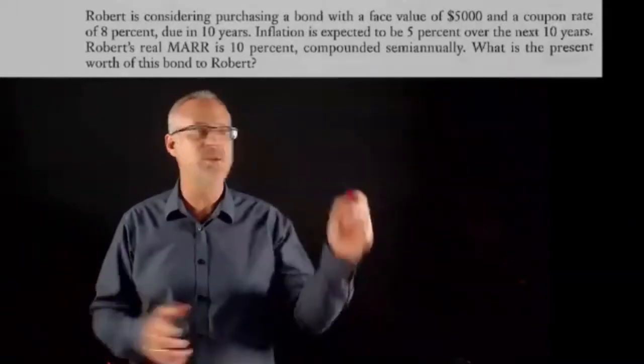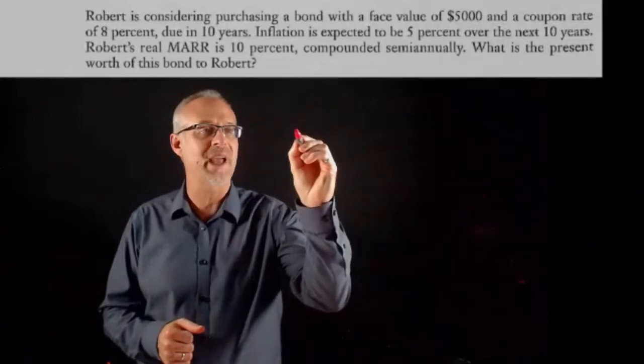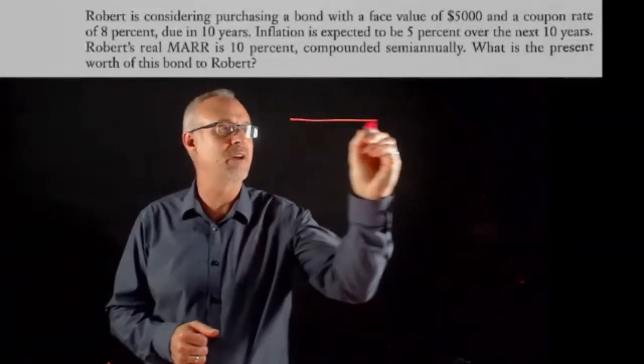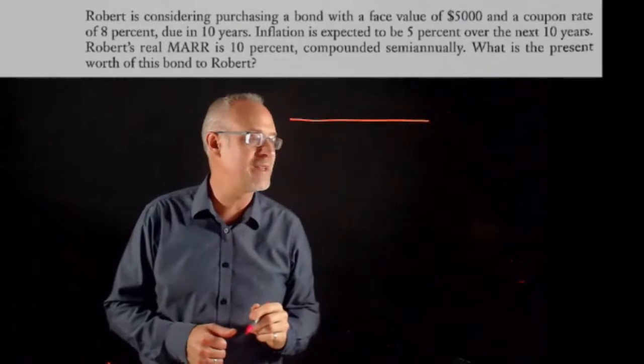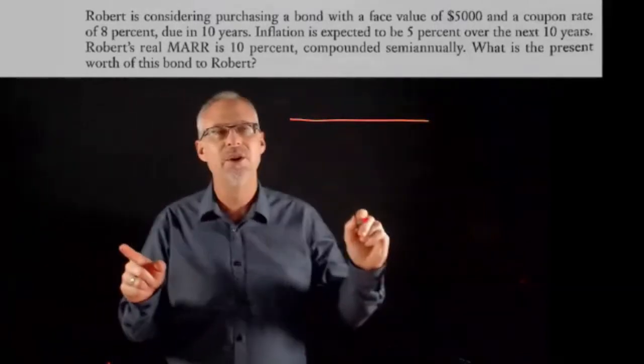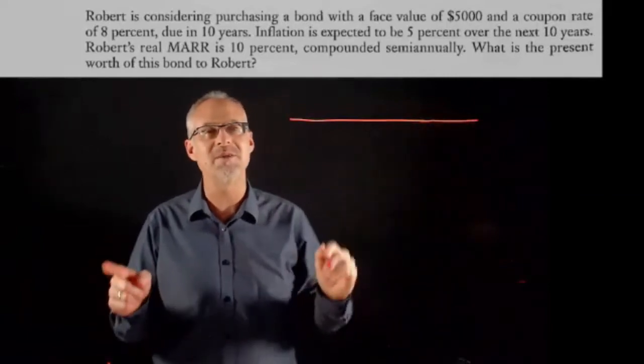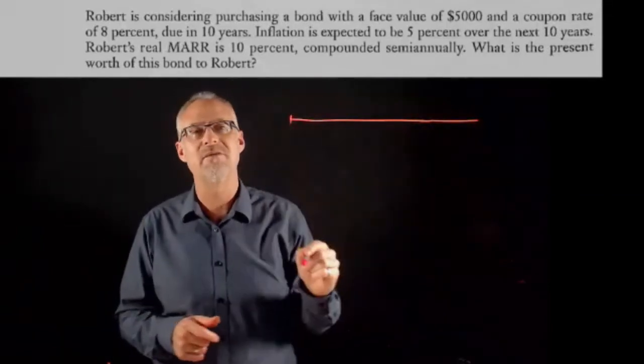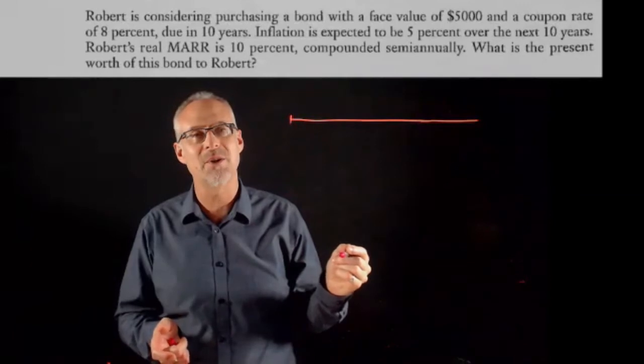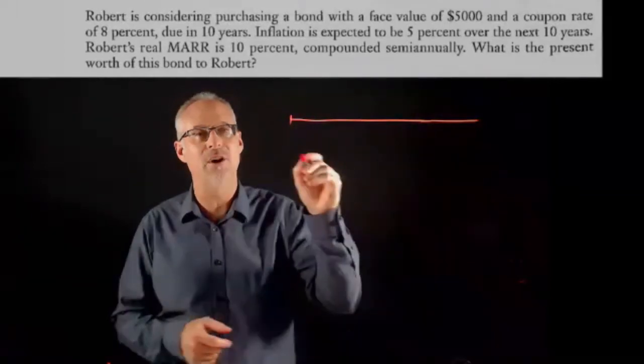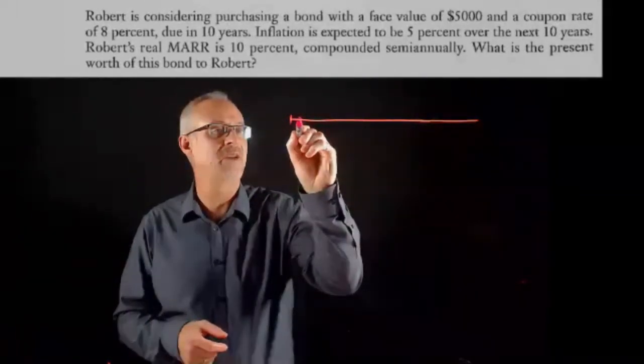Bonds - we know a bond is a cash flow diagram. This particular one is 10 years, but we also know that the coupon payments are every six months unless we're told otherwise, which means I'd have 20 six-month periods of cash flows. I'm just going to draw 20.